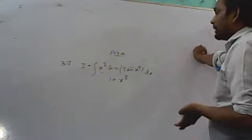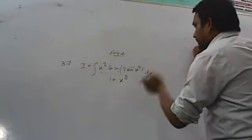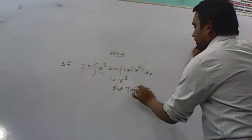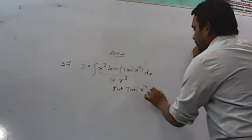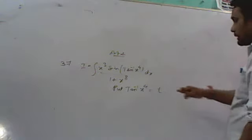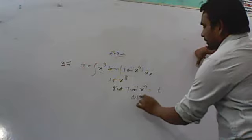Substitution method. So if we take tan inverse x⁴ equals t. So we have to differentiate both sides. We will differentiate both sides with respect to x.